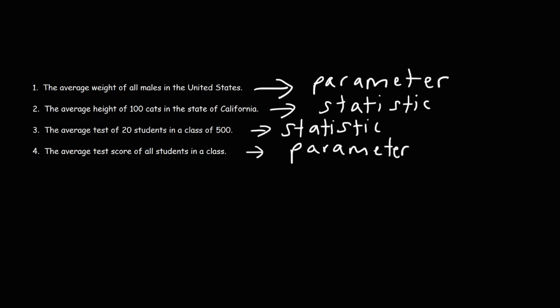Since we're dealing with averages or means, the symbol for number one would be mu, and the same is true for number four. For two and three, the symbol would be x-bar, to represent the sample mean. So now you know the difference between a statistic and a parameter, and also the difference between a sample and a population. Thanks for watching.